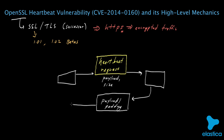The way the attack works is that the attacker will craft a special Heartbeat request. This request will contain a little bit of data, and that data will also contain inside it information about how much data is in the request — the ostensible size of that request. The attacker can craft this request any way he wants, and what he's going to do is something very malicious. The attacker will send a payload that's actually very short — imagine it's just one byte in length — but instead of saying the payload is one byte, the attacker will lie and say this payload is actually 65,536 bytes.